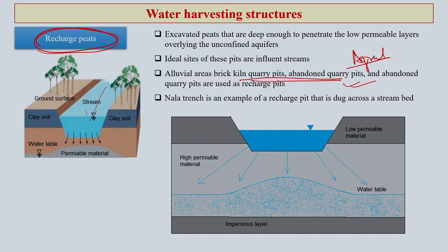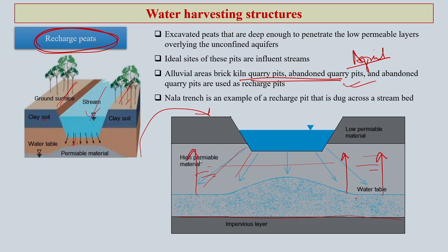You have a stream in an area, the ground surface, and clay soil on both sides, then water goes down below the water table. In the picture explaining recharge pits, there is high permeable material here — important for groundwater recharge — water comes through and goes straight to the water table. Then there is an impervious layer, and the water table slowly rises, allowing crops and other activities to utilize this recharge water.